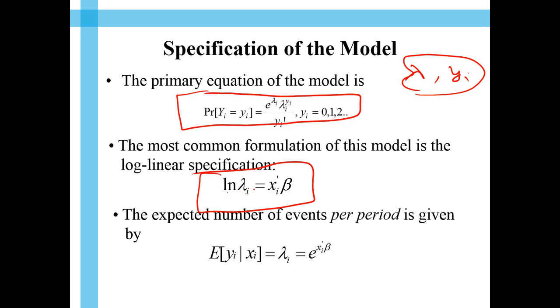logarithm of, so we are trying to find out, what is the average number of events or occurrences that happen. Average number of deaths, average number of accidents, average number of something happening. So, that is nothing but log of the average number that we are trying to model.